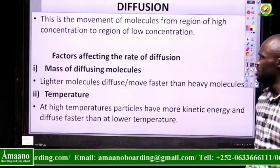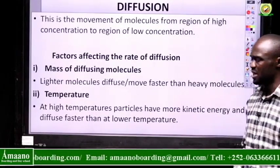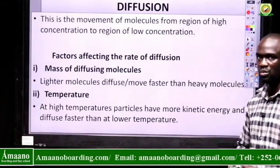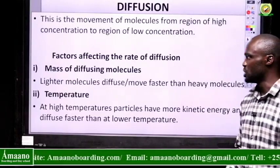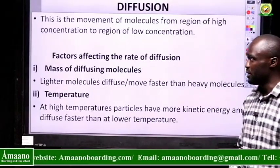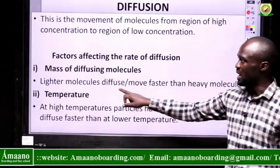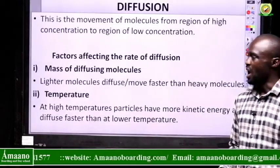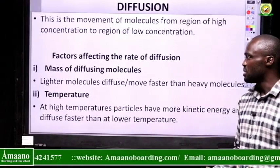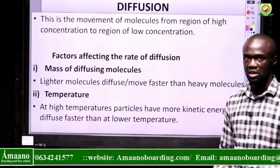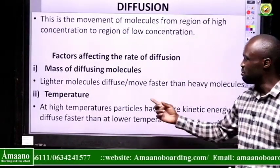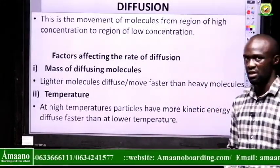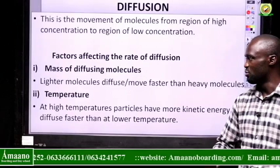Diffusion is affected by a number of factors that determine how fast molecules will move from a region of high concentration to low concentration. The first factor is the mass of the diffusing molecules. Heavy molecules move slowly, but lighter molecules always diffuse or move faster than heavy molecules.